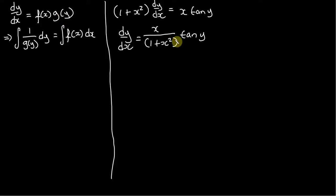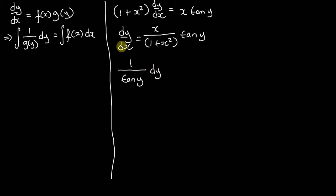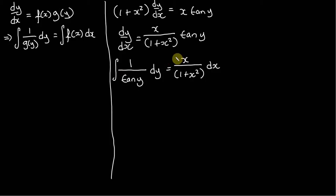So we just have to do the exact same thing — use a bit of algebra and manipulate this. We're going to divide by tan(y) right across, and multiply by dx right across. That's going to give us 1/tan(y) dy on the left-hand side, and x/(1+x²) dx on the right-hand side. That's exactly the form we need. So we can now insert our integration signs — we're integrating 1/tan(y) with respect to y on the left, and x/(1+x²) with respect to x on the right.